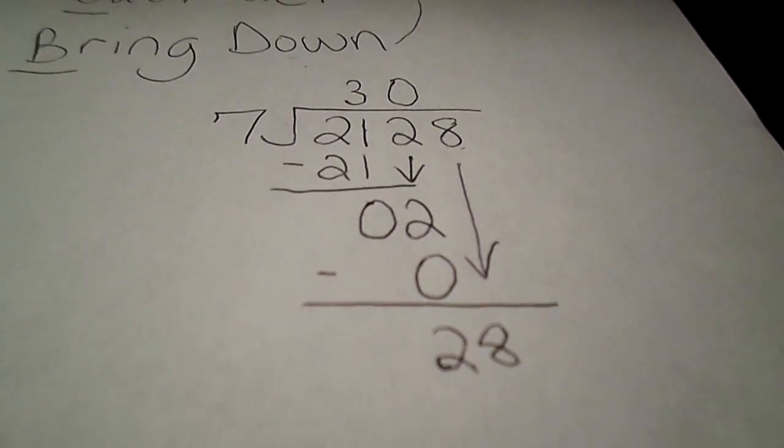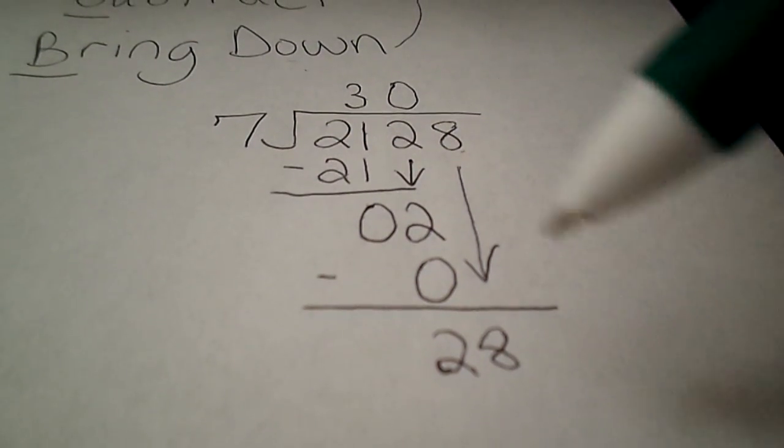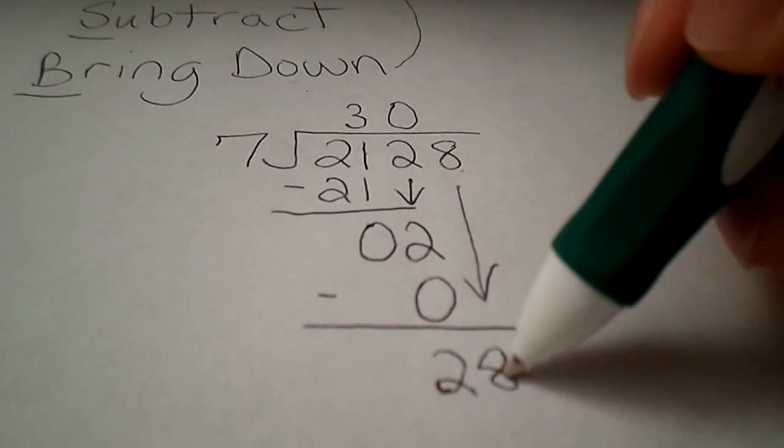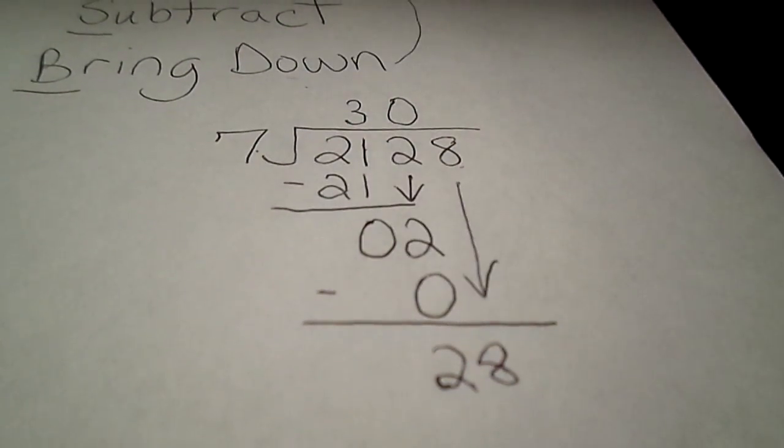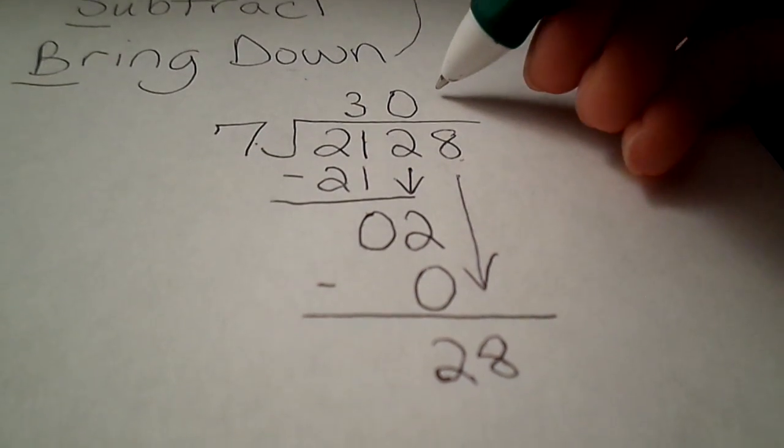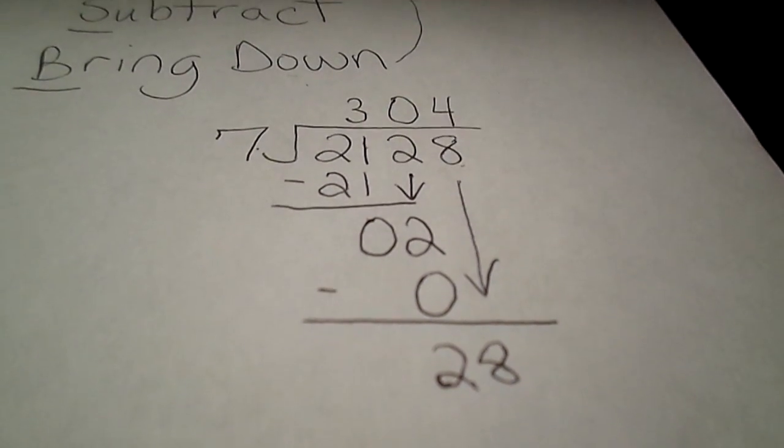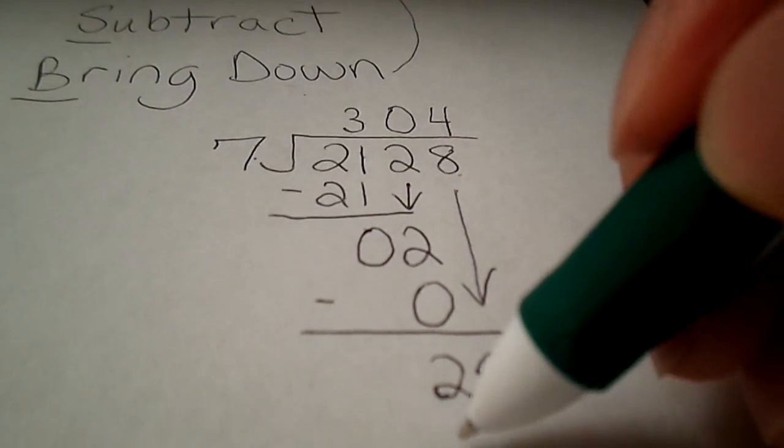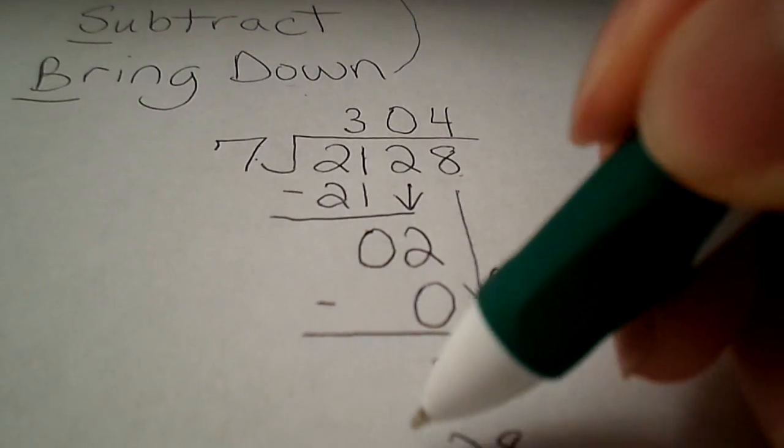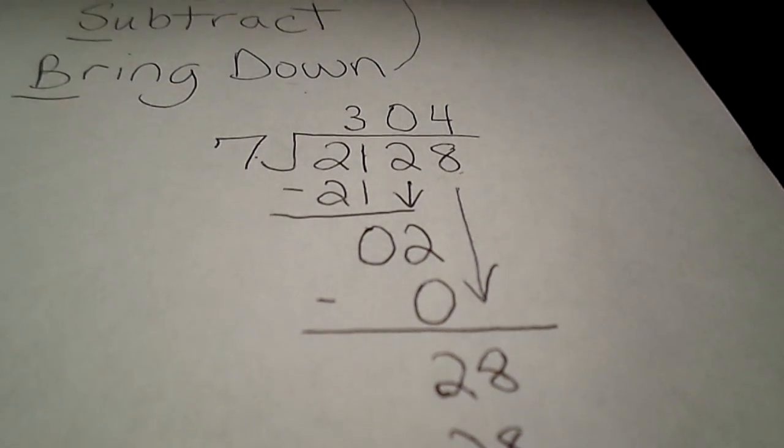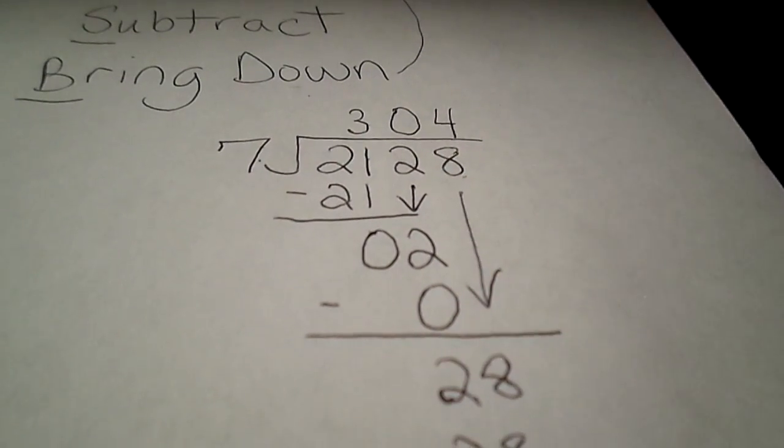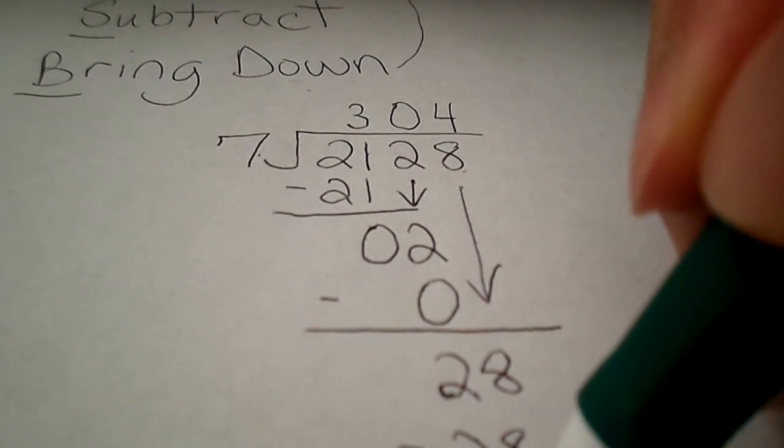28. Now divide. Because again you're starting over again after you brought it down. So 28 divided by 7 is 4. 4 times 7 is 28. So that's the multiply part. Then we subtract again. 0.